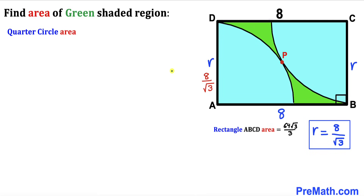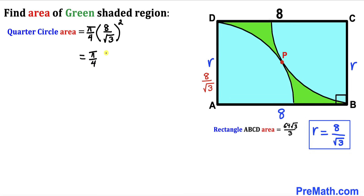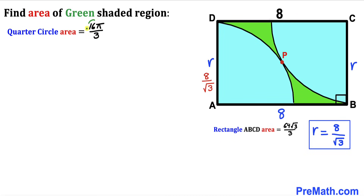Now let's calculate the area of one quarter circle. Recalling the area of a circle formula — area = πr² — and dividing by 4 for a quarter circle, the area equals (π/4) × (8/√3)². Simplifying: (π/4) × (64/3) = 16π/3. So the area of each quarter circle is 16π/3.